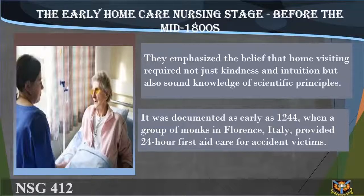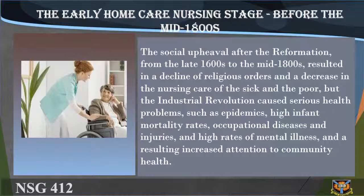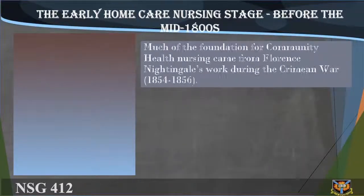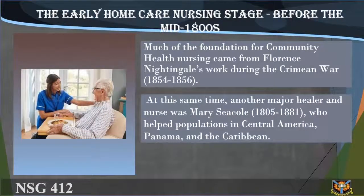It was documented as early as 1244 when a group of monks in Florence, Italy provided 24-hour first aid care for accident victims. The social upheaval after the Reformation, from the late 1600s to the mid-1800s, caused a decline in nursing care for the sick and poor. The industrial revolution then caused serious health problems — epidemics, high infant mortality rates, occupational diseases and injuries, and high rates of mental illness — resulting in increased attention to community health. Much of the foundation for community health nursing came from Florence Nightingale's work during the Crimean War (1854–1856).